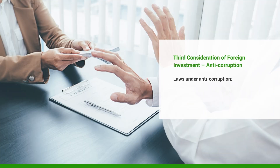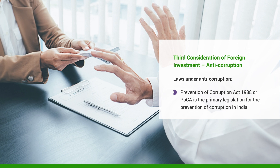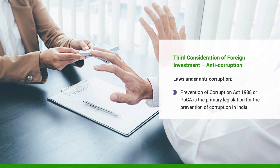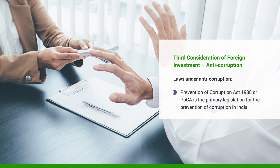The third consideration is anti-corruption. The Prevention of Corruption Act 1988 (POCA) is the primary legislation for prevention of corruption in India. As per the amendment of July 2018 to POCA, commercial organizations — including companies that are either incorporated or undertaking business in India — can be specifically charged as bribe givers and are punishable with fine.